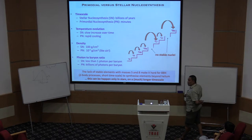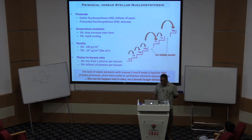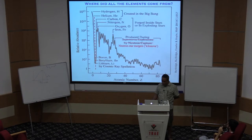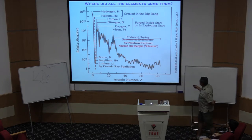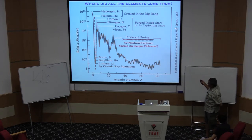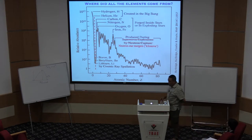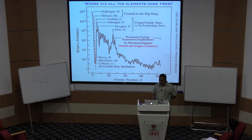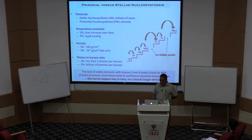That was what was pointed out in the classic paper by Burbidge, Burbidge, Fowler and Hoyle — the B²FH paper in Reviews of Modern Physics — which accounted for everything beyond helium as due to rapid neutron capture in stars and supernovae. We are talking here just about the formation of helium.